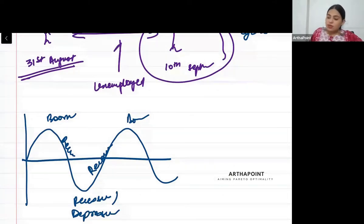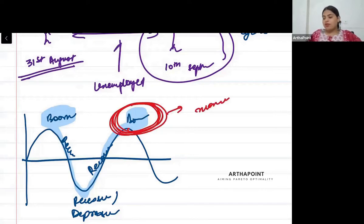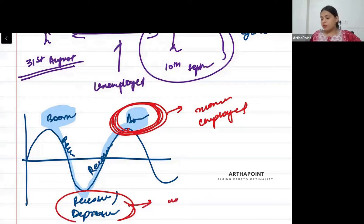So the economy goes from boom to recession to depression, and then recovers back to boom. When the economy is in the period of boom, the economy will have maximum employment - everybody will be employed. When the economy is in recession or depression, it will have unemployment.